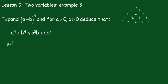So (a-b)^4 is equal to a^4 - 4a^3*b + 6a^2*b^2 - 4ab^3 + b^4.